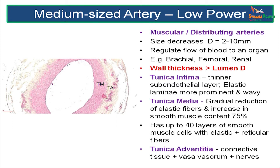Next are the medium sized arteries, also called distributing arteries. Examples include the brachial, axillary and femoral arteries. Their wall thickness is more than the luminal diameter. The tunica intima is slightly thinner than in elastic arteries, but the elastic laminae are more prominent because there is less elastic fibre in the tunica media. The tunica media has up to 40 layers of smooth muscle cells with smooth muscle content reaching about 75%, along with a few elastic fibres. The tunica adventitia has connective tissue, some vasa vasorum and nerves.